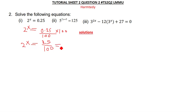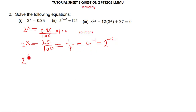This 1 over 4 can also be written as 4 to the power negative 1, which can also be written as 2 to the power negative 2. So now we can equate: 2 to the power x equals 2 to the power negative 2. According to the rules of indices, when the bases are the same the exponents are also equal, so x equals negative 2.